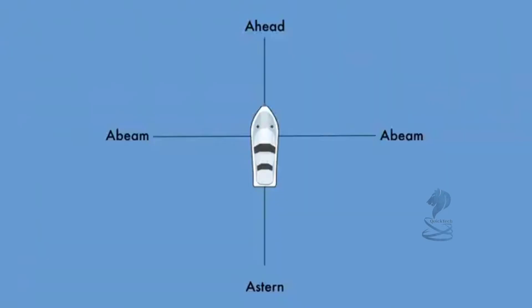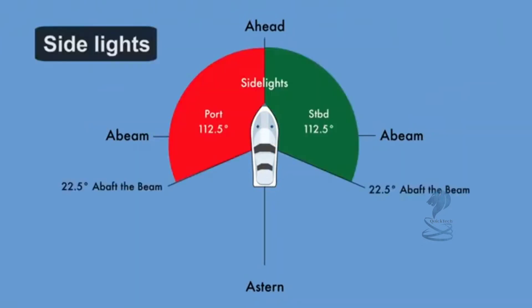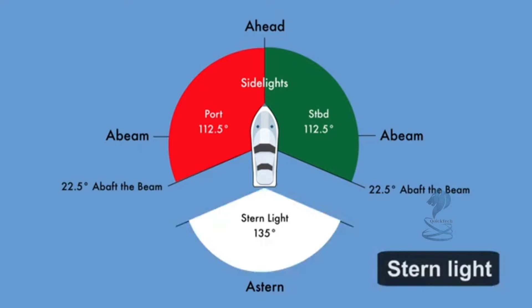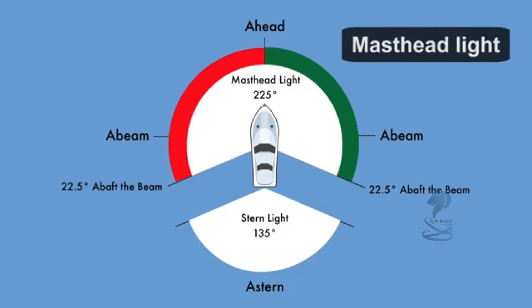The definitions of navigation lights as described in the Collision Regulations: Side lights are red to port and green to starboard. They are each visible through an arc of 112.5 degrees, or 22.5 degrees above the beam. The white stern light fills in the rest of the circle and is visible through an arc of 135 degrees. By definition, a masthead light is a white light covering the same combined arcs as the side lights, so 225 degrees. A masthead light is not necessarily at the top of the mast, and there can be more than one masthead light.